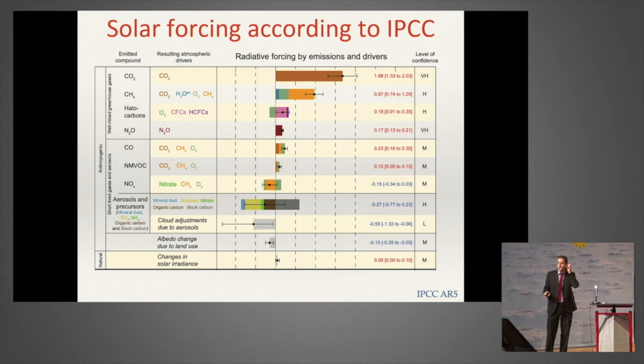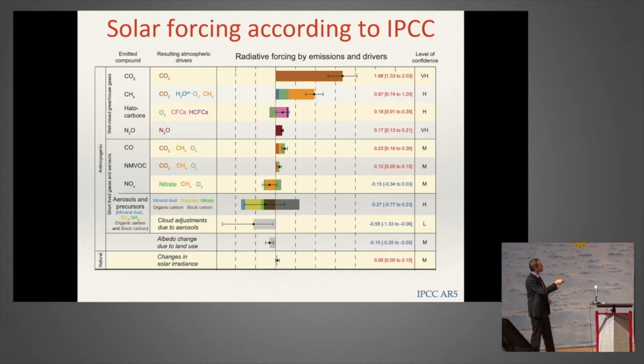This is from the previous IPCC report. It shows the contribution of different greenhouse gases, aerosols, and so forth. You'll see that they claim the contribution the sun has to changes in the energy budget over the 20th century, or since the Industrial Revolution, is very, very small. And I'm going to try to convince you that it has to be very large.